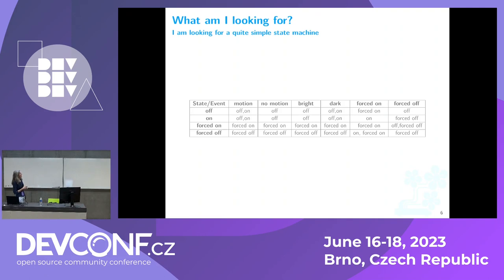For example, my system thinks it's a good moment for my light to be off, then it receives a motion event. It could change my light to off or on — it depends on whether it is dark outside or not. And maybe we can spend one more minute on the forced events.